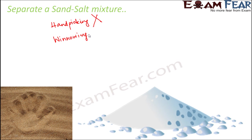The next method is winnowing. In winnowing, we separate a mixture where one particle is heavy and the other is light. But in this case, the particle size of sand and salt are comparable, and their heaviness is also somewhat similar. So winnowing would not be a very suitable option either.